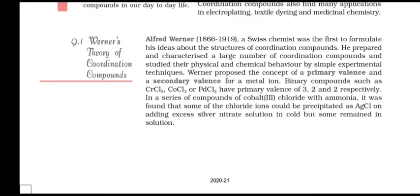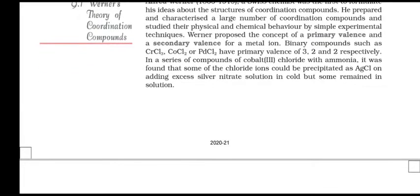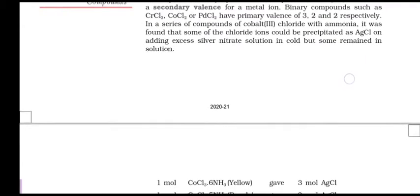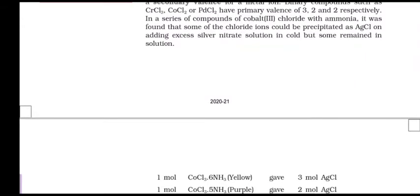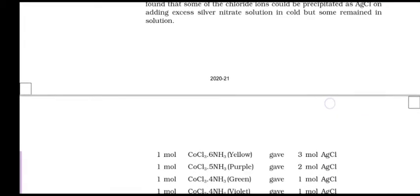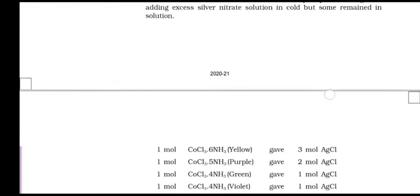Werner's Theory of Coordination Compounds. Alfred Werner, a Swiss chemist, was the first to formulate his ideas about the structures of coordination compounds. He prepared and characterized a large number of coordination compounds and studied their physical and chemical behavior by simple experimental techniques. Werner proposed the concept of primary valence and secondary valence for a metal ion. Binary compounds such as CrCl3, CoCl3, and PdCl2 have primary valences of 3, 3, and 2 respectively. In a series of compounds of cobalt chloride with ammonia, it was found some of the chloride ions could be precipitated as AgCl on adding excess silver nitrate in cold, but some remained in solution.